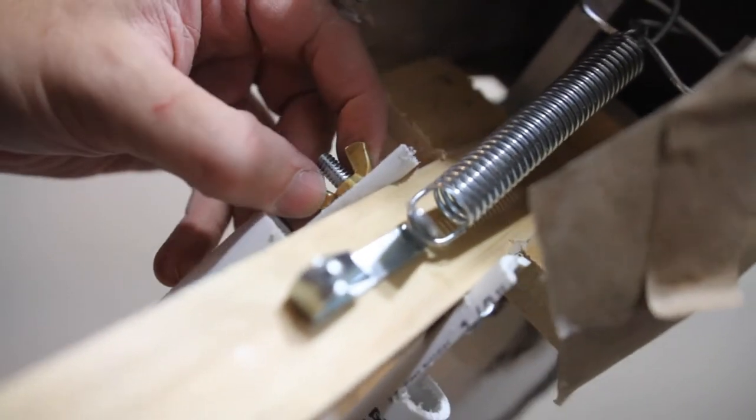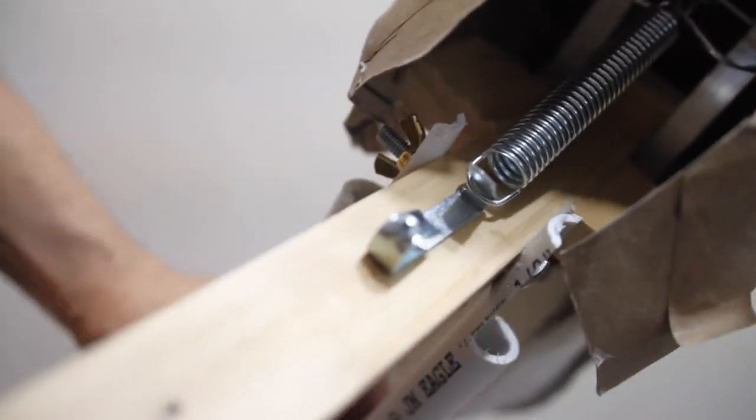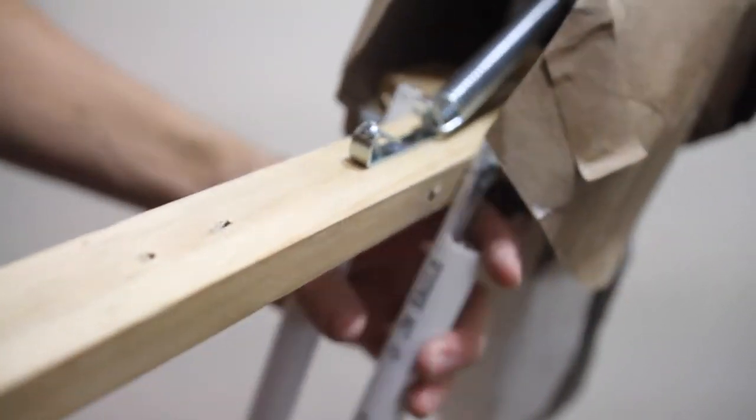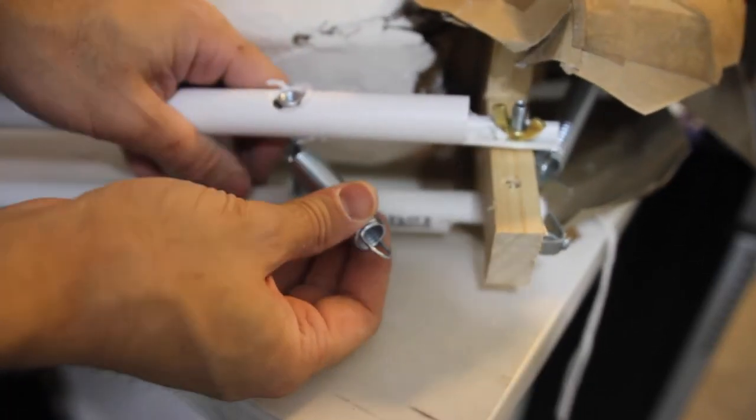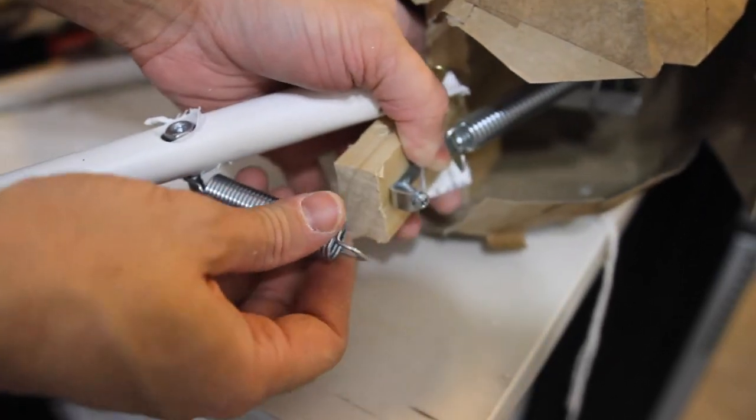This is basically what all the joints look like. It was just a bolt and a nut. You'll notice that I used springs just to create some tension for some of the joints.